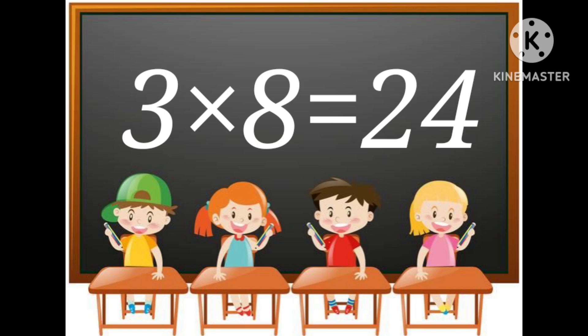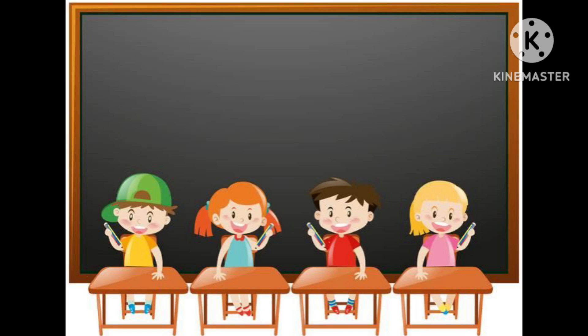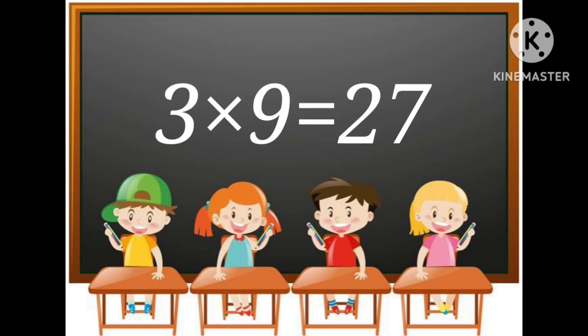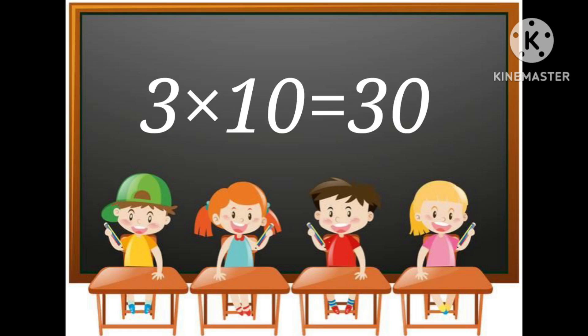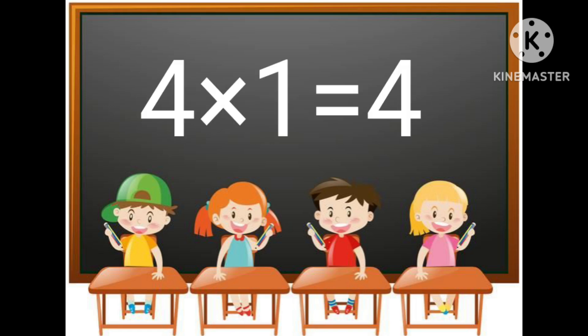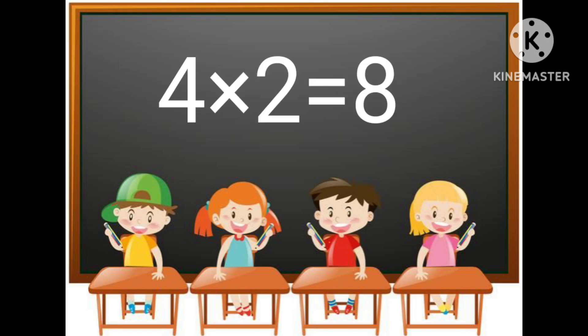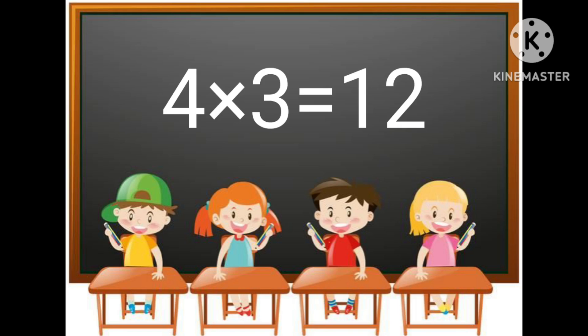3 multiplied by 8 is equal to 24. 3 multiplied by 9 is equal to 27. 3 multiplied by 10 is equal to 30. 4 multiplied by 1 is equal to 4. 4 multiplied by 2 is equal to 8.